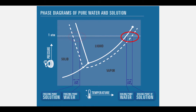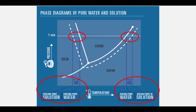The solid-liquid line is also different for the solution. This brings us to our next two colligative properties: boiling point elevation and freezing point depression. Looking at this same phase diagram, if you compare the boiling point of the solvent and the solution, you see that the boiling point is higher for the solution, and the freezing point is lower for the solution than the solvent.